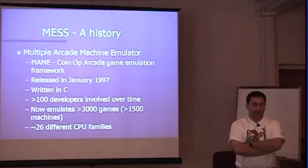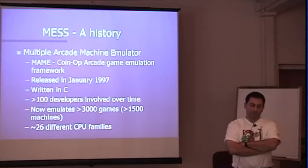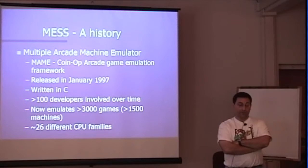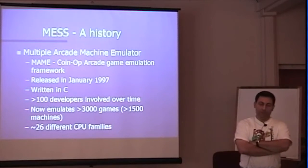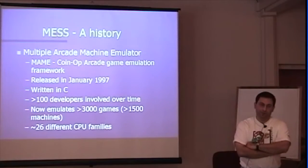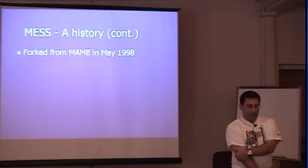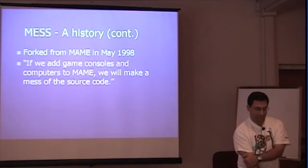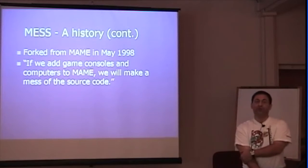The MESS project came from MAME — Multiple Arcade Machine Emulator — a framework for emulating coin-op games. It was released in 1997, written in C. Over 100 developers have been involved, and it has successfully emulated over 3,000 games across more than 1,500 machine configurations, with about 26 different CPU families emulated in the source code. In May 1998, someone said we could emulate game consoles and computers too — but there was concern that adding those would make a mess in the source code. That's actually the real origin of the MESS name.